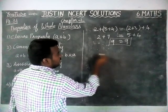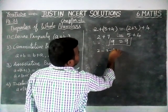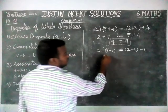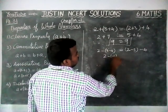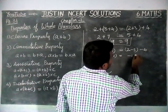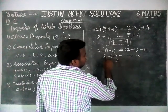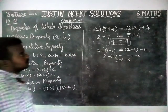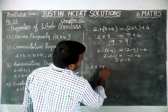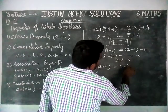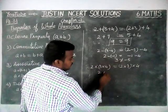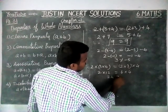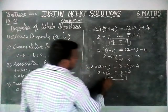Next, we check for subtraction. 2 minus (3 minus 4) equals 2 minus (minus 1) equals 3, but (2 minus 3) minus 4 equals minus 5. These are not equal. For multiplication, 2 into 3 into 4 equals (2 into 3) into 4 — both give 24. So left hand side is equal to right hand side.